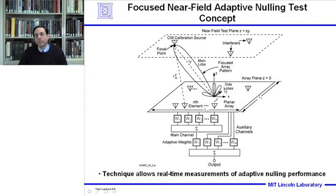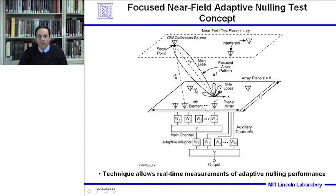Having established a focused near field pattern with a main beam and side lobes, we can now introduce interferers on the side lobes of this pattern. One reason for using a near field test plane is that for conventional planar near field scanning of large phased array apertures, this type of equipment already exists, and we may be able to use or modify it to do near field adaptive nulling. This technique allows real-time measurements of adaptive nulling performance, done in an anechoic chamber.